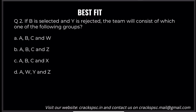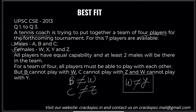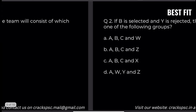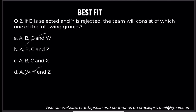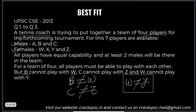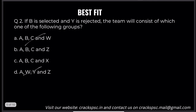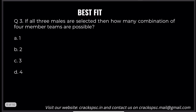If B is selected and Y is rejected, the team will consist of which of the following? With B, W, and C — C cannot go with Z. So the answer is E. That is also the correct answer — very simple.